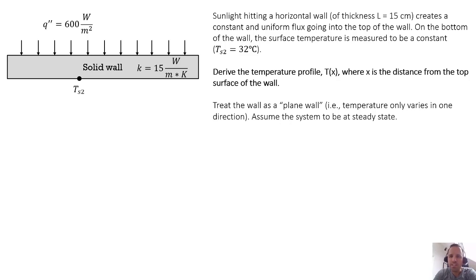On the bottom of the wall, the surface temperature is measured to be constant at 32 degrees C. Derive the temperature profile T as a function of x, where x is the distance from the top surface of the wall. So we're going to define our coordinate system going from here down. We'll call that x.